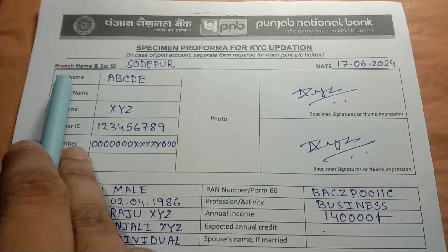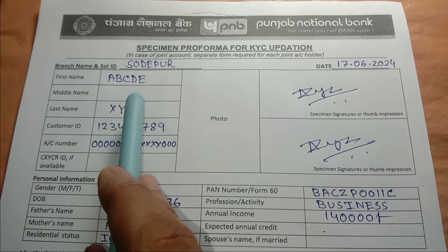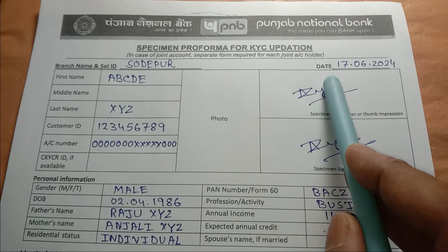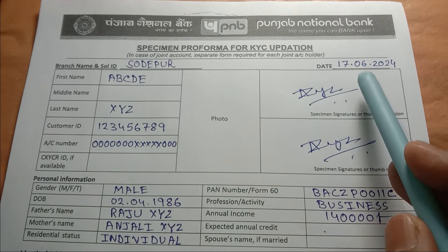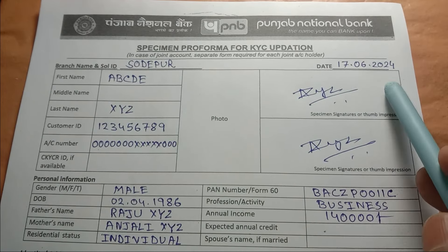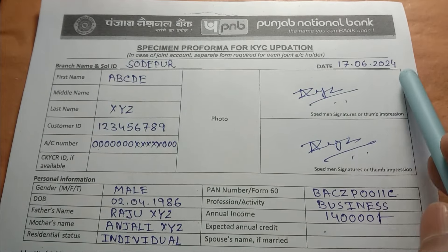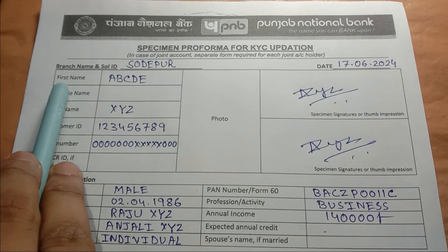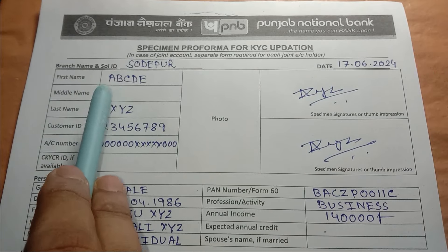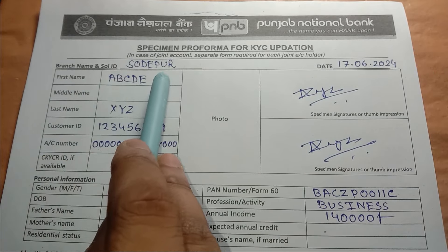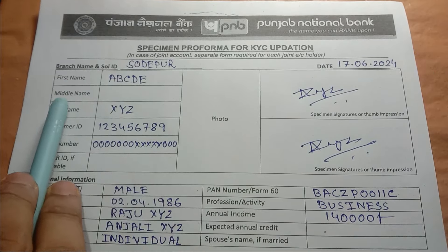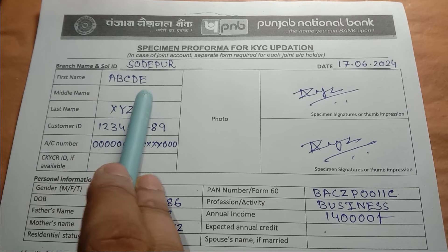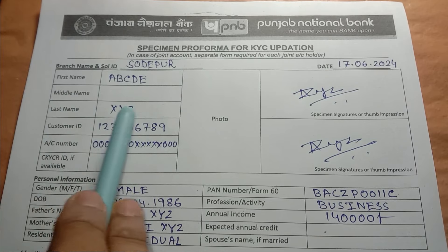First, branch name — we can write the branch name. We can write the date; when we have filled up, we can write the date. We can write the first name, middle name, and last name.